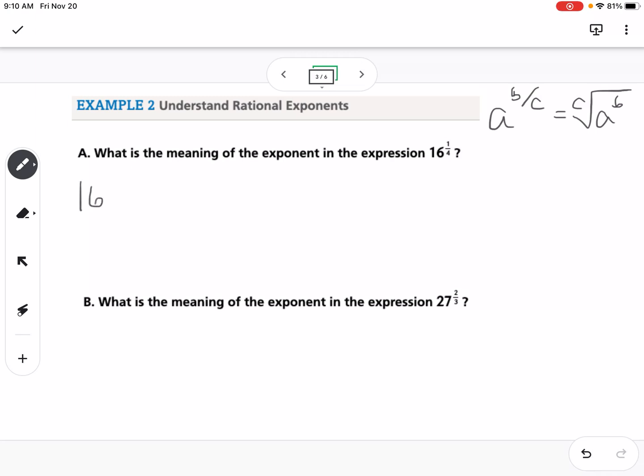So if I have 16 to the 1 fourth power, I could rewrite that as the fourth root of 16 to the first power. So then we might know this. We might just know what number raised to the fourth power equals 16. But if you don't, you can always make a factor tree. So you could always say 4 and 4, 2 and 2, 2 and 2, these have been factored. So we need 4 in a group to pull one out because of the index being 4. So the answer to this would just be 2.